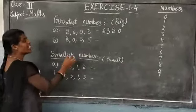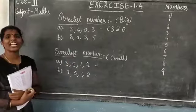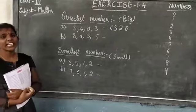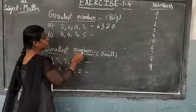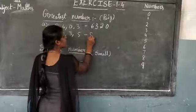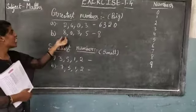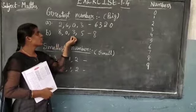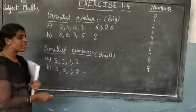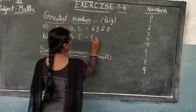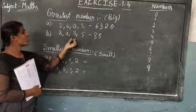Ok, did you understand children? Here also, here also, first you write the greatest number — mean big number. First you should write 8. 8 is the big number, children. Ok, next: 0, 3, 5 — which is the big? 5 is big. Then you write 5. Ok, this over, this over.